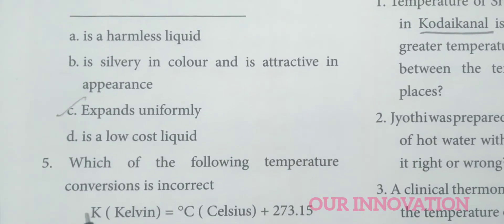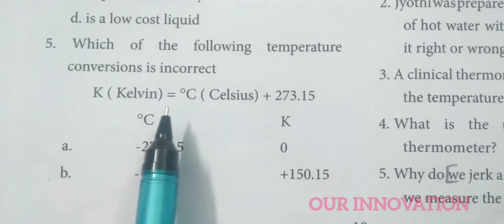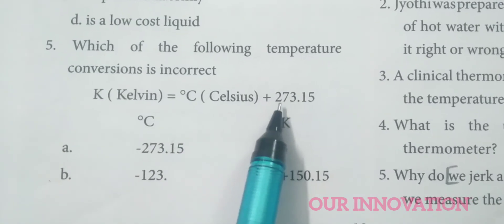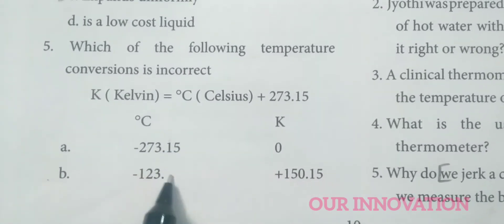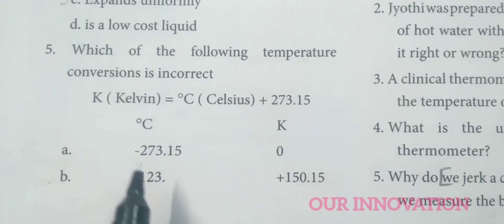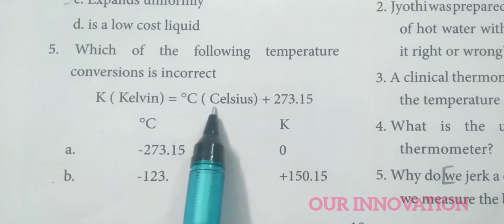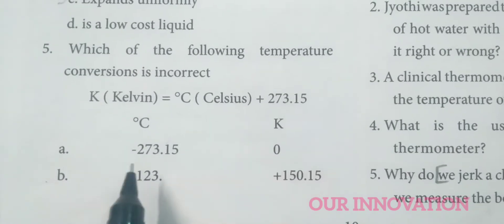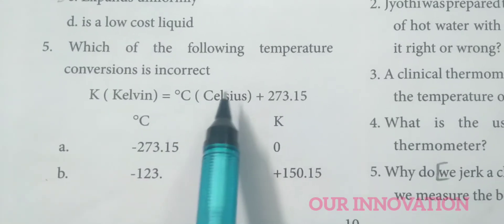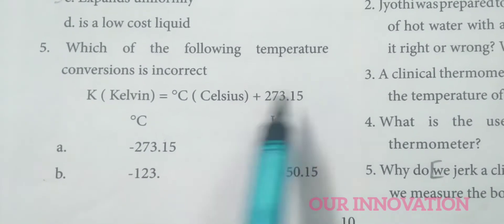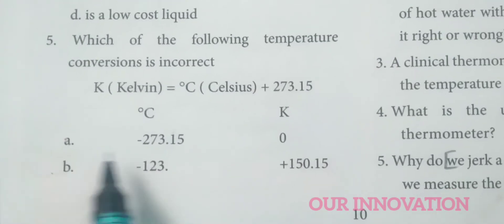Which of the following temperature conversions is incorrect? The formula is: Kelvin is equal to Celsius plus 273.15. Using this formula, Kelvin and Celsius values can be verified. If Celsius is given and 273.15 is added, then minus 273.15 plus 273.15 equals 0. So Kelvin is the correct answer, and option A is correct.